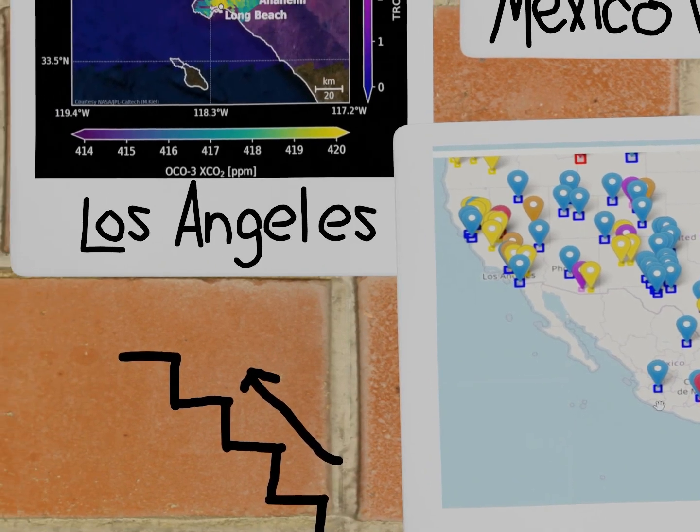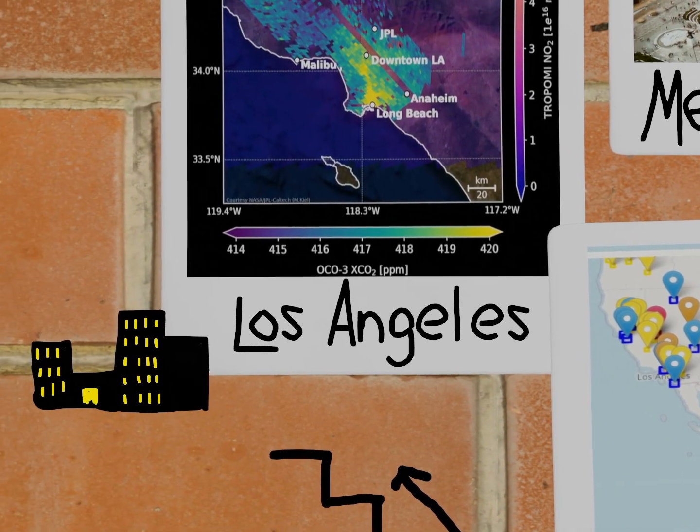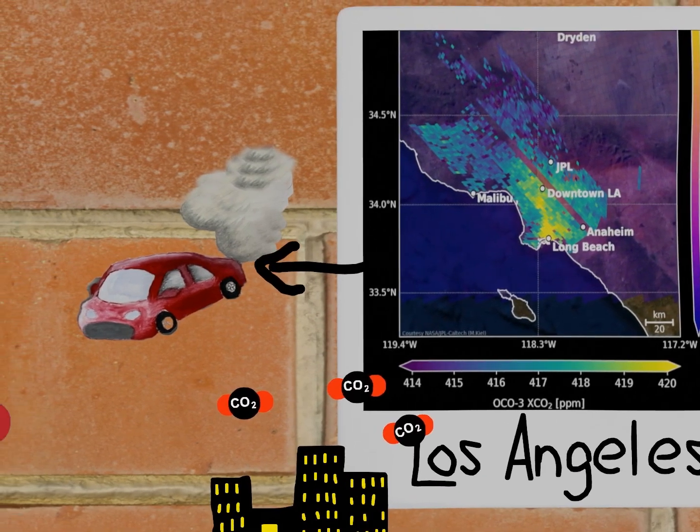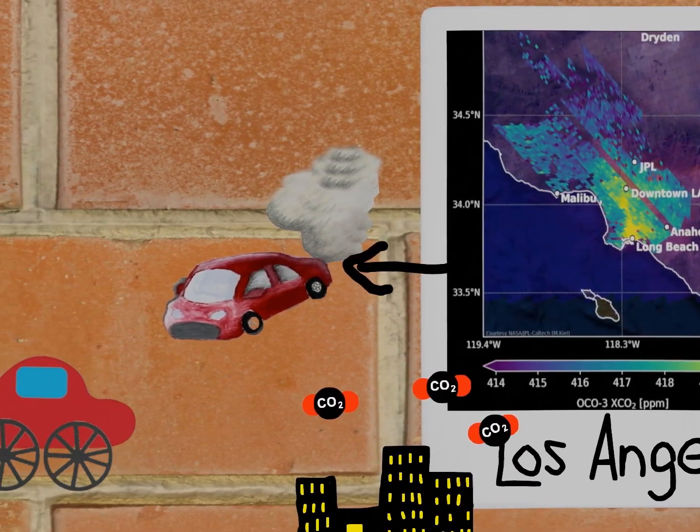And our plan is to take this one step further. While these maps show all the carbon dioxide over a city, NASA is now working to isolate what portion comes just from cars and trucks.